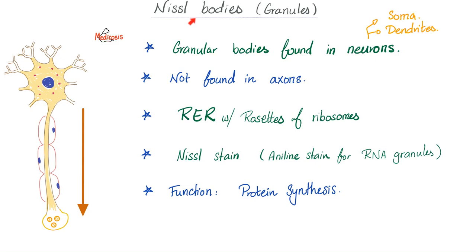How do you stain Nissl bodies? With the Nissl stain — named after Mr. Nissl — which is an aniline stain for RNA granules. Ribosomes and RNA are made of the same raw material. The function of Nissl bodies is protein synthesis, since rough ER makes proteins.